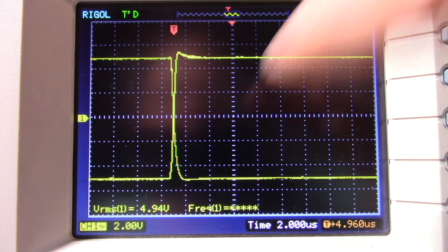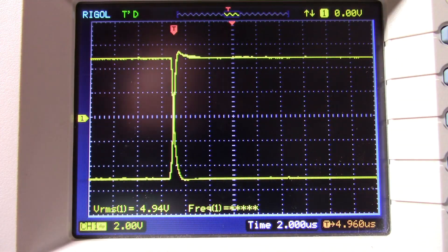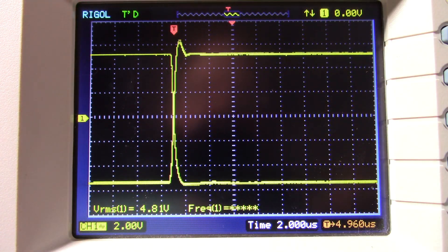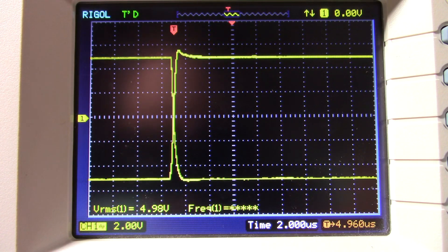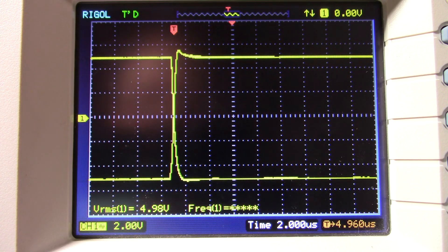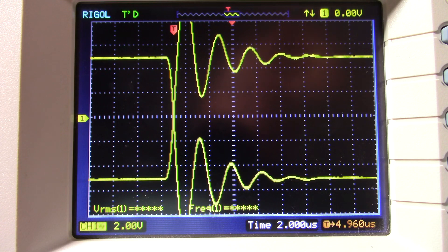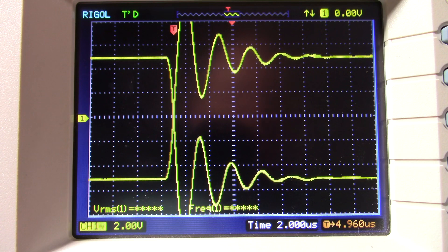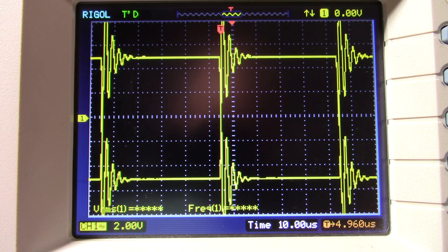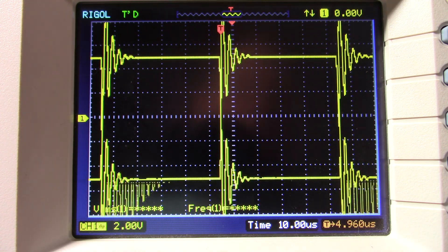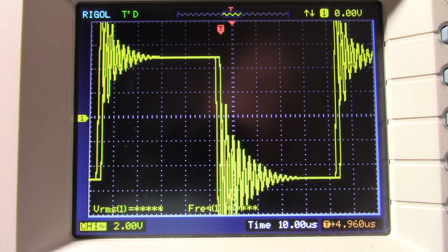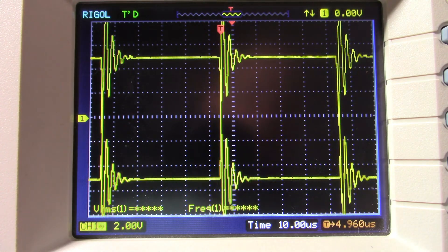So now I've plugged in a 33 picofarad Miller compensation cap. We're not getting that ring anymore. We're kind of getting a bit of overshoot. Kind of a weird looking little ring there. This is the 0.274 microfarad cap across the output again. And you can see it's ringing. Let's bypass the coil again. It doesn't break out into oscillation, but it's ringing entirely too much.